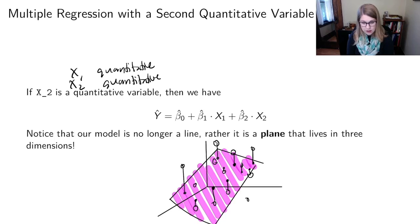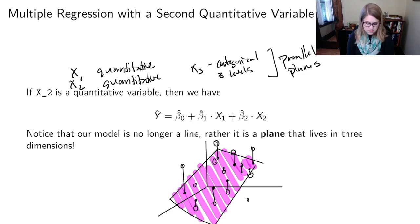But if I added a third variable here, so let's say X3, and this one is going to be categorical. And let's say it has three levels. That would be a parallel planes model. And so I can kind of visualize that.